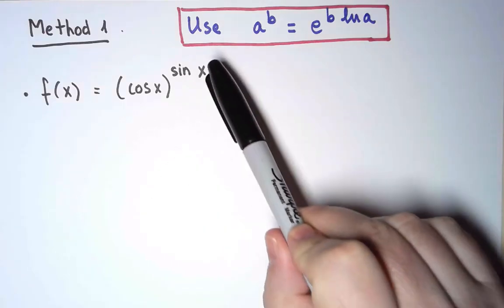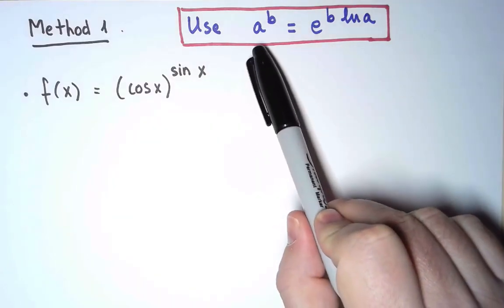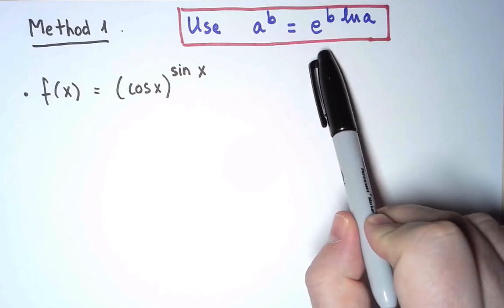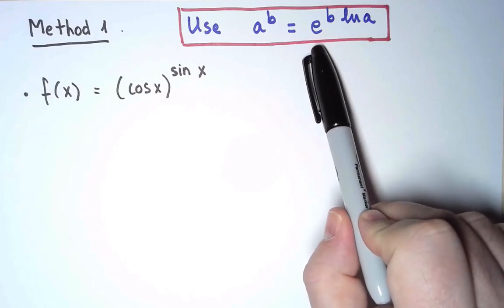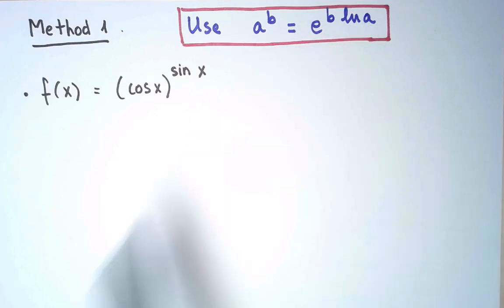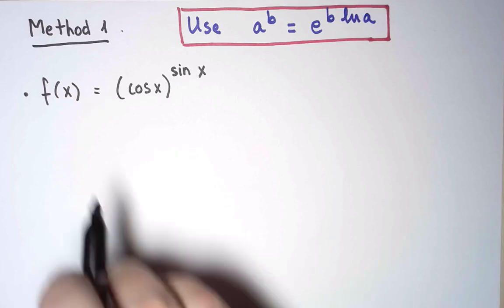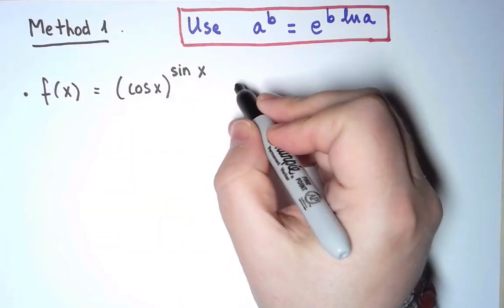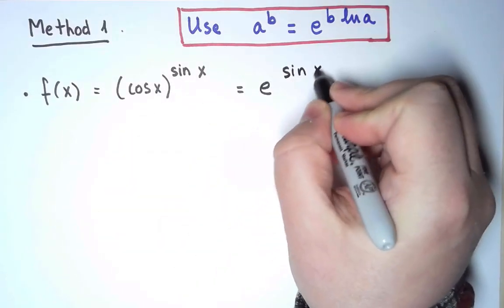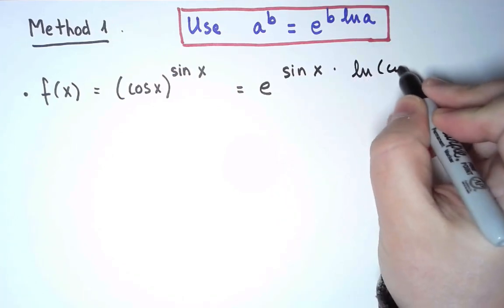The first method consists of using this identity that allows me to rewrite any power exponential as an exponential with base e. Why is this useful? Because I know how to take the derivative of an exponential with base e. In our case, this function can be rewritten as e^(sin x · ln(cos x)).